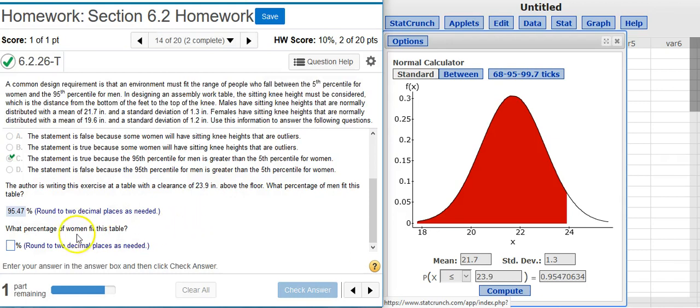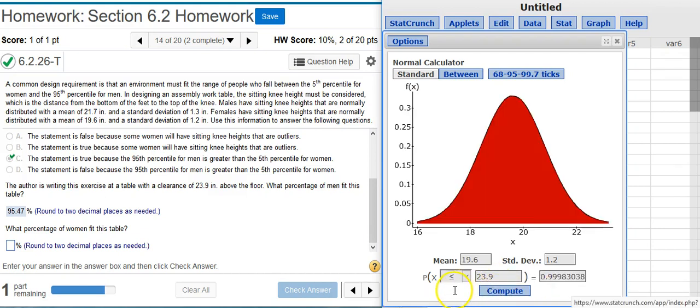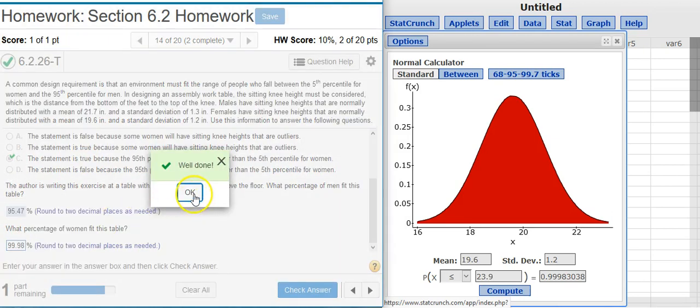The next problem asks for the percentage of women that will fit under the table. So I'm going to do the same thing again, putting in the summary statistics for my distribution for women. And compute, and it looks like, wow, just about all of them, around two decimal places again.